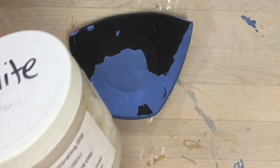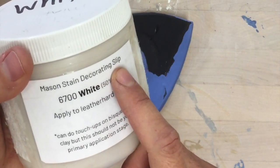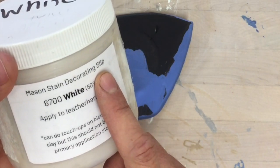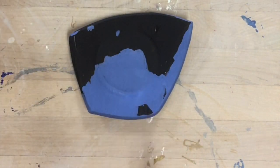You can, for these types in the smaller containers that say mason stain decorating slip, you can use them for touch-ups after it's fired. But really you need to plan on relying on getting all your color on there before it is fired.